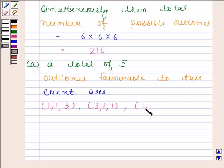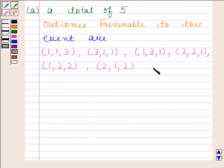Then (1,3,1), (2,2,1), (1,2,2), and then is (2,1,2). So these are the possible outcomes which are favorable to this event, that means a total of 5 is obtained in these outcomes.